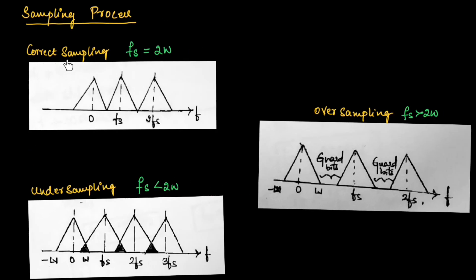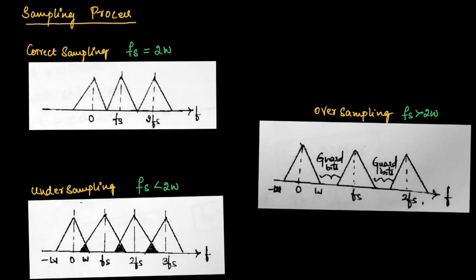Let us understand correct sampling, under-sampling, and over-sampling. When the sampling frequency equals 2W, this is known as correct sampling — there is no aliasing effect. When the sampling frequency is less than 2W, it is known as under-sampling, where signals overlap and this overlap region is called the aliasing effect. When the sampling frequency is greater than 2W, it is known as over-sampling, where there is spacing between signal samples called the guard band, and there is no aliasing effect. This concludes the sampling process.